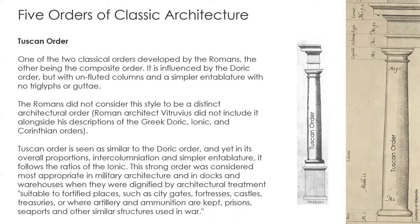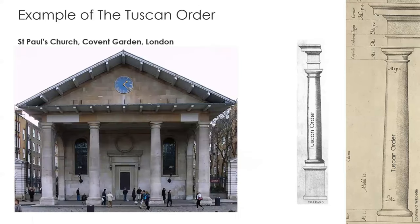Here's an example of the Tuscan order — this is St. Paul's Church in London. It uses the Tuscan order to establish authority and order. There's also something notable here: the columns in the middle are round, but the columns on the edges are square.